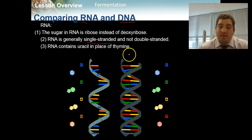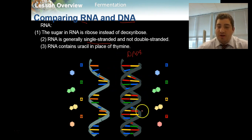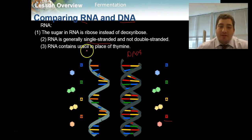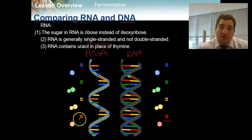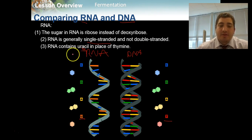So these two strands here — the one on the right is going to be DNA, and we can tell because it's a double helix, two strands, and it also has the nucleotide base pair thymine in it. And this one is going to be RNA because it's a single strand, as we can see, and it has uracil in it instead of thymine. So these are three major differences between DNA and RNA.